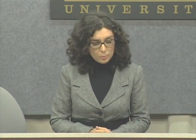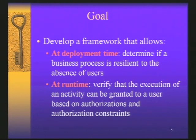Another problem that arises due to the introduction of users in a business process is how to make sure that the user who executes an activity has the permission to do that. There is a need to enforce an access control mechanism on the execution of business process activities. In the context of business processes, access control means identifying authorizations on the execution of activities, but also specifying authorization constraints such as separation of duty and binding of duty constraints. The goal of our work is to propose a framework that, at deployment time, evaluates if the process is resilient to the absence of users, and at runtime verifies whether the execution of an activity by a user can be granted or not.